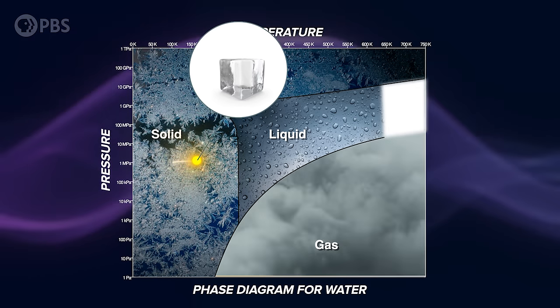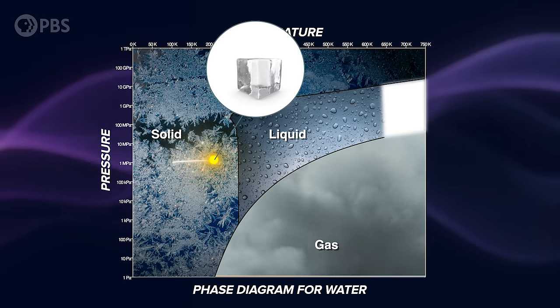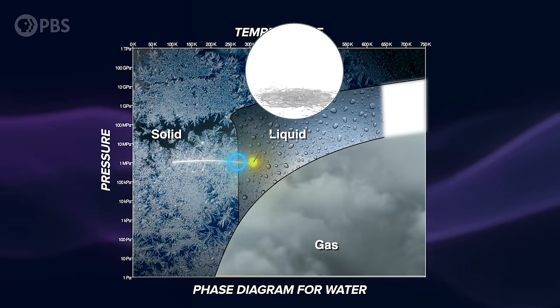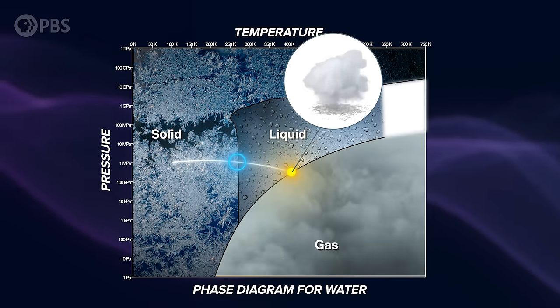At these melting and boiling boundaries, the material is momentarily a mix of both states. But there are some surprises on this map too.